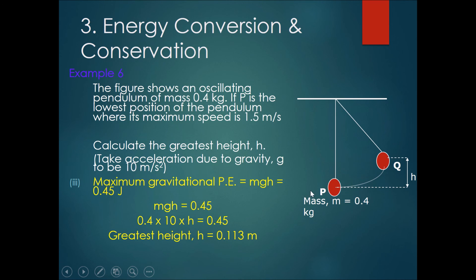Then now, they want you to calculate the height h of Q above P. Using our prior knowledge that Q has a GPE of 0.45 joules, we can sub in the GPE formula. GPE is equal to mgh, which is 0.45 joules. So mgh equals to 0.45, subbing the mass 0.4 and the gravity of 10. The only variable that we have left is h. Solving for h, the greatest height would be 0.113 meters.